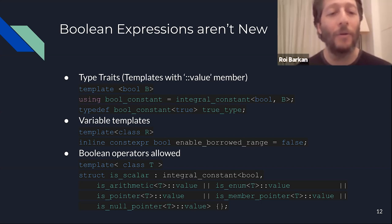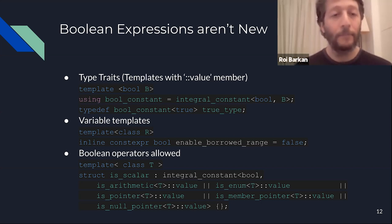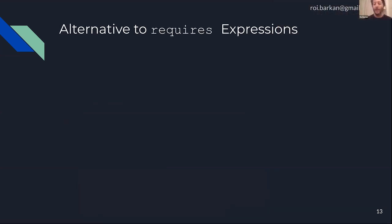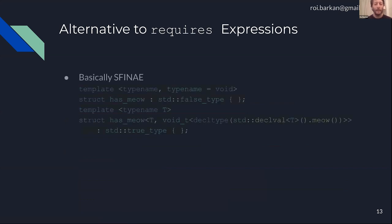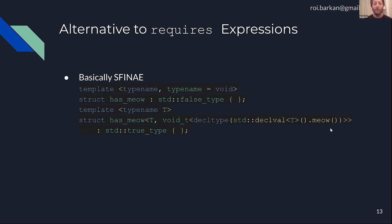There were also ways to be as expressive as the requires clause, but those were more complicated. That's where many people first hear about SFINAE — substitution failure is not an error. This very complicated clause basically tries to define whether a type has a method called meow or not. It will become true for every type that has a meow method and false for every other type.